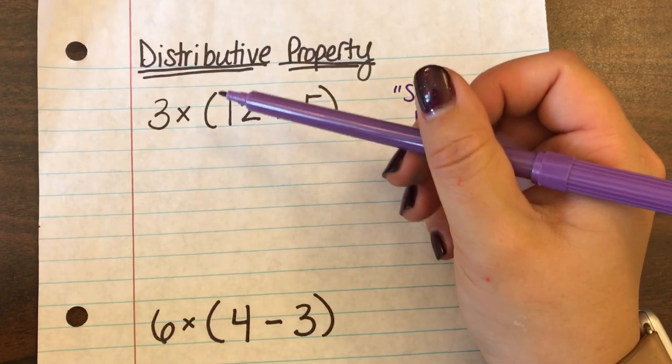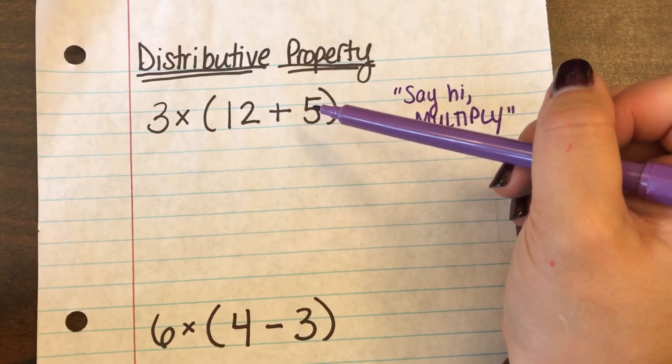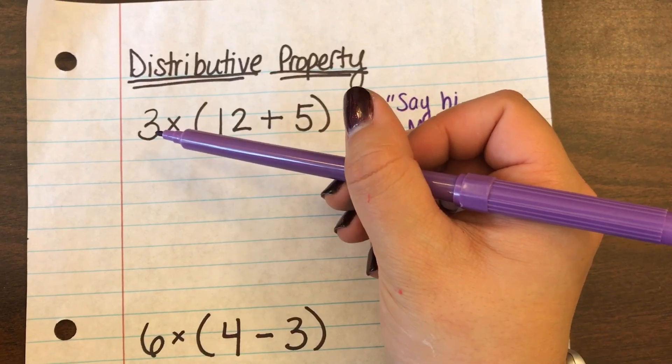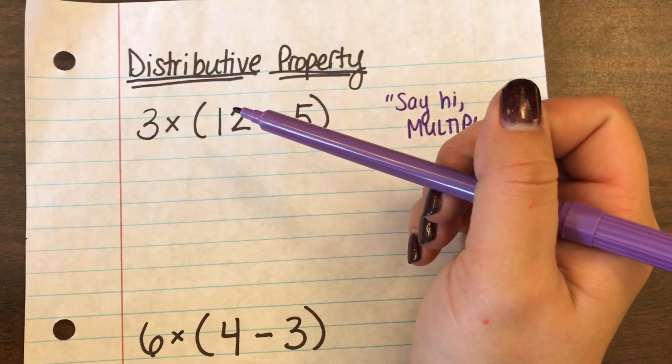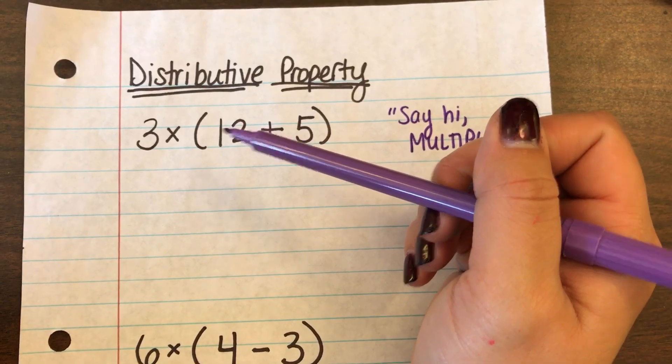So what that means is I like to think of this as a house, the parentheses, and inside the house is a 12 and a 5. Now outside the house is this 3 over here and he's trying to get inside of the house, and in order to do so he needs to say hi to each of the numbers inside by multiplying.